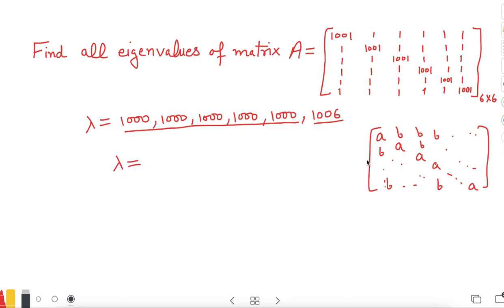Then eigenvalues for such a numerical are A minus B. This eigenvalue is repeated n minus 1 times if you are working with an n by n matrix.